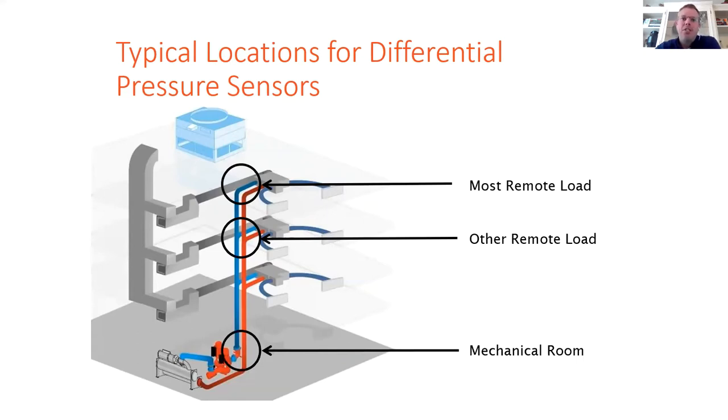The last location is often used in retrofit applications and when an engineer doesn't specify an exact location of the sensor, which is in the mechanical room or between the pump and the first load. So the minimum head pressure set point is then basically set at the pressure drop of the entire piping system and allows very little turndown.